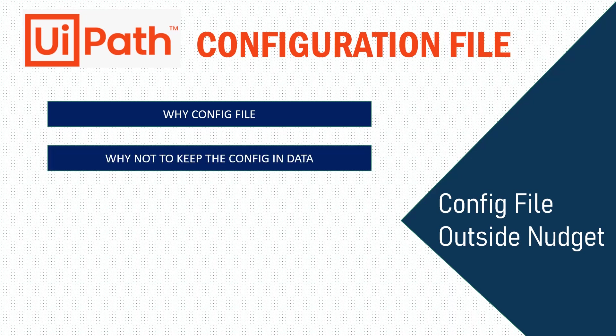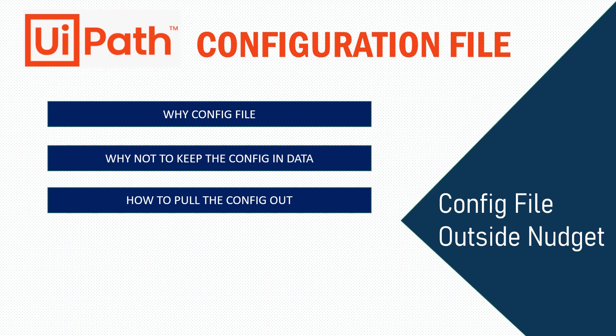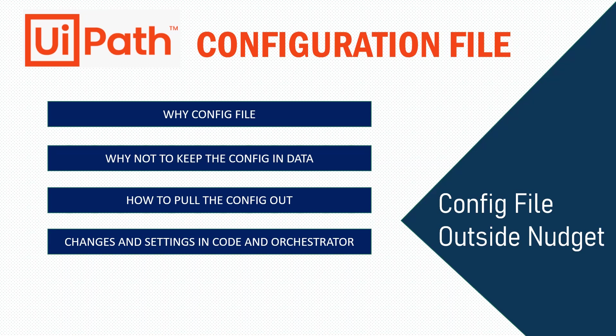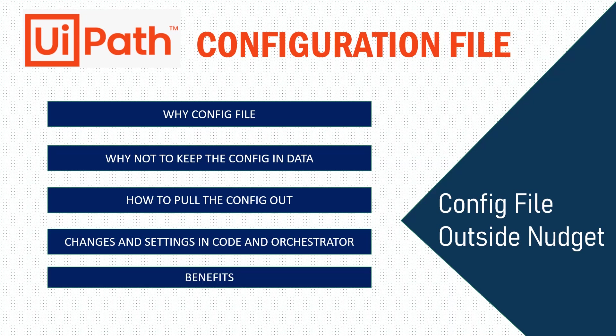In this video we are going to quickly demonstrate why we require a configuration file. Then we'll see why not to keep the data config in the data folder. The configuration file is located inside a folder called 'data', which is inside the project location. Whenever we publish the nugget, the data folder goes along with it. We'll see the challenges when the config file is part of the nugget deployed to Orchestrator, how to pull the config out of the data folder, what changes to make in the code and Orchestrator, and what benefits we get.